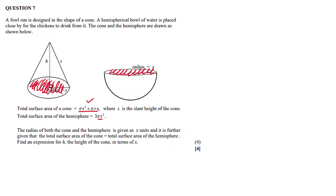We adjust according to this scenario. The radius of both the cone and the hemisphere is given as x units. It is further given that the total surface area of the cone is equal to the total surface area of the hemisphere. We must find an expression for h, the height of the cone, in terms of x. That is the question — calculate the height of the cone in terms of x.